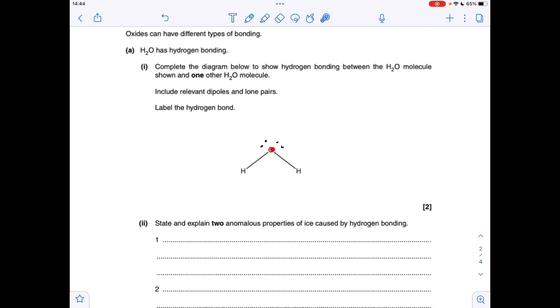So electronegativity of oxygen is reasonably high, so the dipole is delta minus on the O, delta plus on the H's. So there's the other H2O molecule there, and all we need to do now is show the hydrogen bond, which goes from the lone pair on one of the H2O molecules to the H on another.